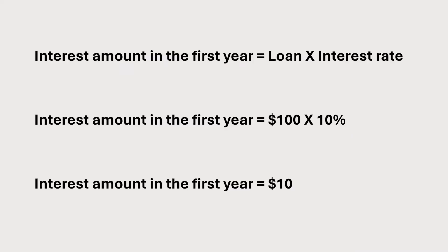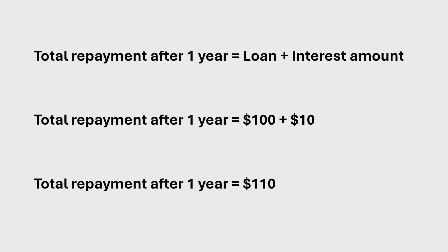For the first year, the interest is calculated as $100 times 10%, which equals $10. At the end of one year, John owes a total of $110 — the original $100 plus $10 in interest.